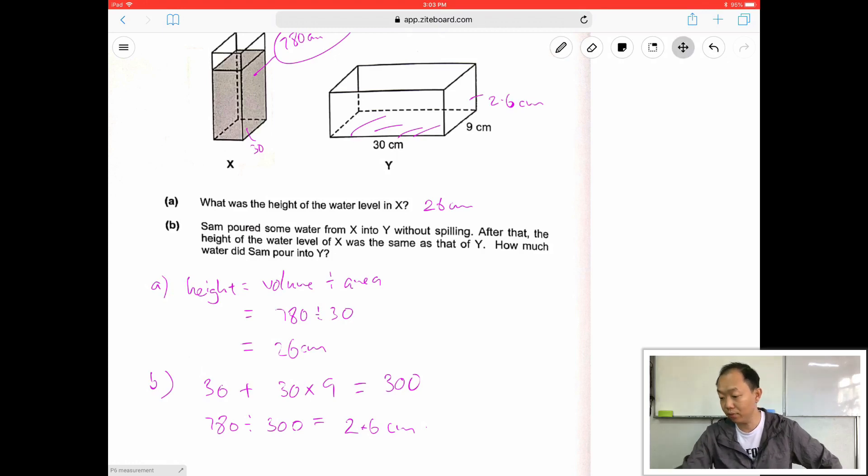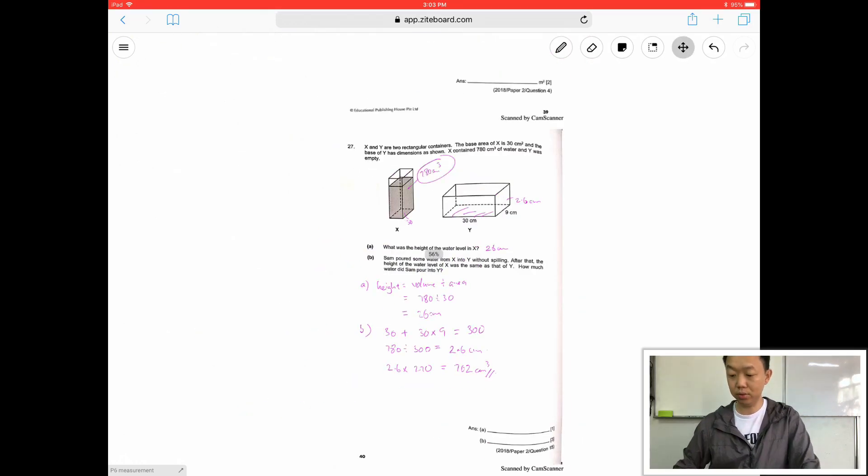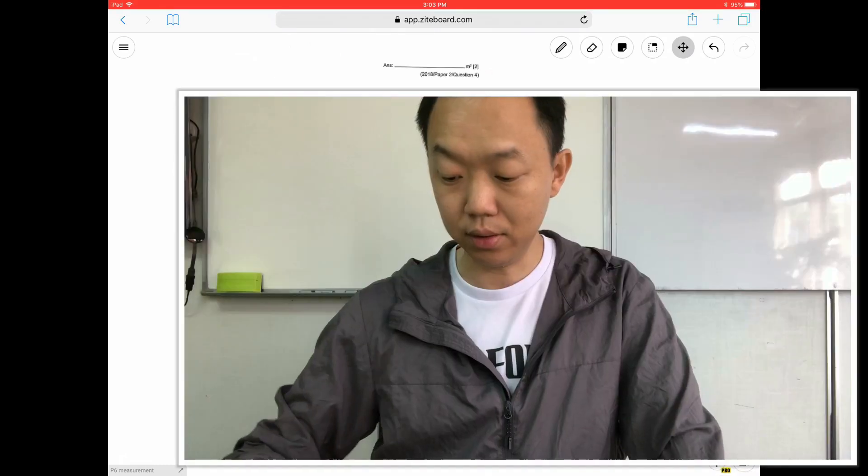So to find the volume of water that went in, what we have to do is to take 2.6 times 270, which is the base area. So 2.6 times 270 cm³, and that will be the final answer. 702 cm³. I believe that's all.